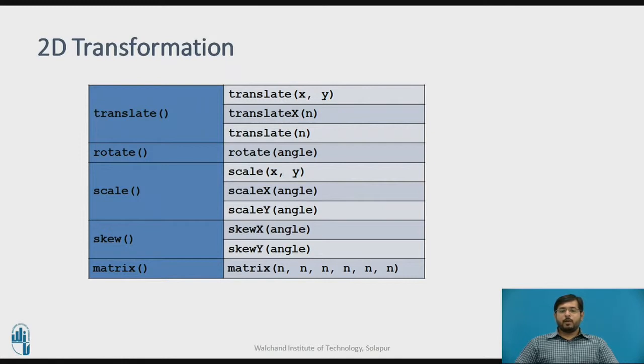You can use skew property to tilt an element. So skewX, that is if you want to tilt with an x-axis angle and skewY, if you want to tilt with a y-axis angle. Now, matrix is the function which takes six values, which takes six numbers and transforms the specific element in six directions.